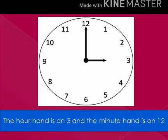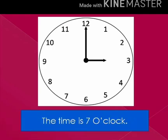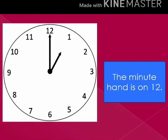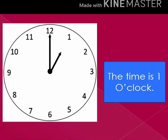The hour hand of this clock is on 3 and the minute hand is on 12, which means the time is 3 o'clock. In this watch, the hour hand is on 1 and the minute hand is on 12, so the time is 1 o'clock.